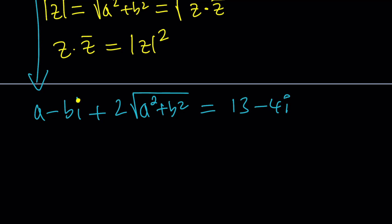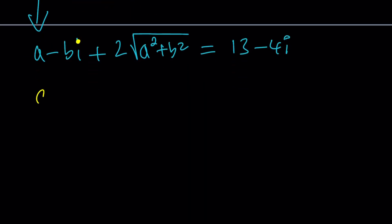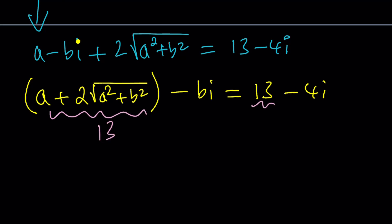We have a real part and an imaginary part. Let's put the real parts together so they stay together nicely. You could even put that in parentheses for emphasis: a plus 2 times the square root of a squared plus b squared, minus bi equals 13 minus 4i. This is the real part and this is the real part, so this should equal 13. And from here you can immediately say because they both have minus signs, b equals 4.